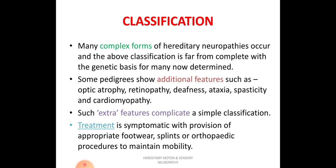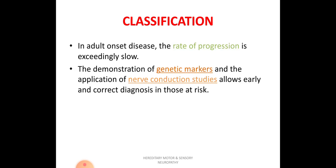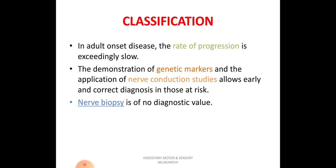Treatment is always symptomatic, with provision of appropriate footwear, splints, or orthopedic procedures like surgery to maintain the patient's mobility as much as possible. If the disease starts in adult life, the rate of progression will be slow, which is a better prognosis. Genetic markers and nerve conduction studies are helpful to reach a correct diagnosis for individuals who are at risk. Biopsy does not have a role in diagnosis.